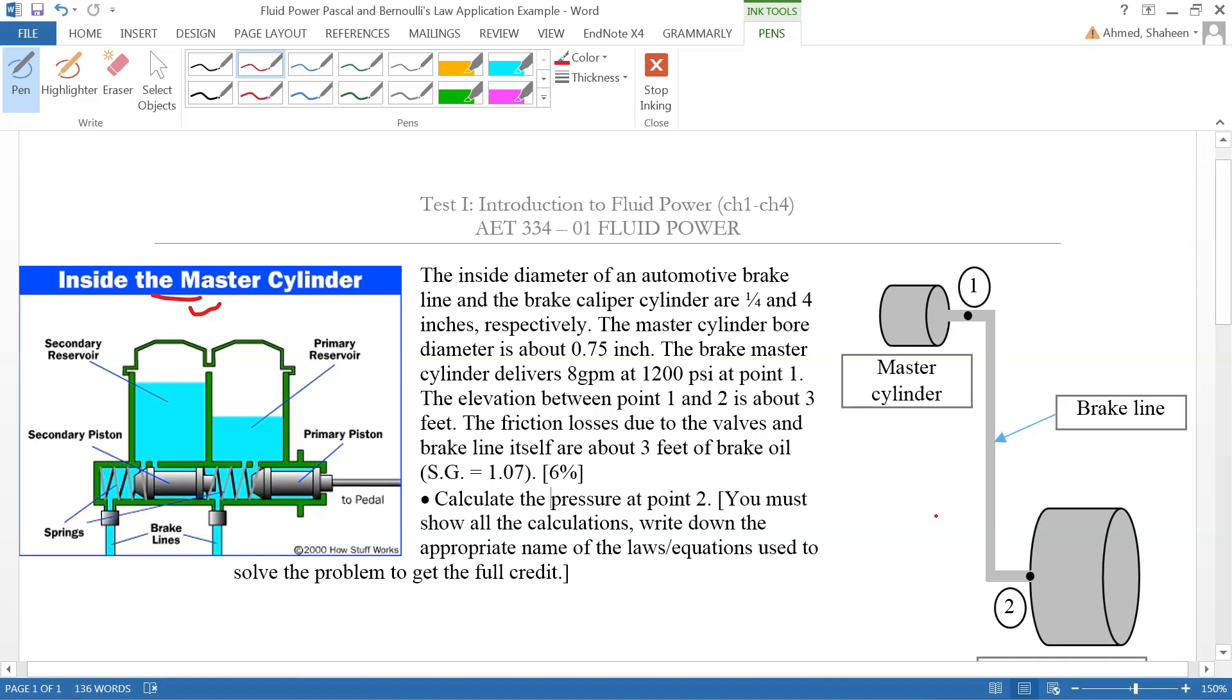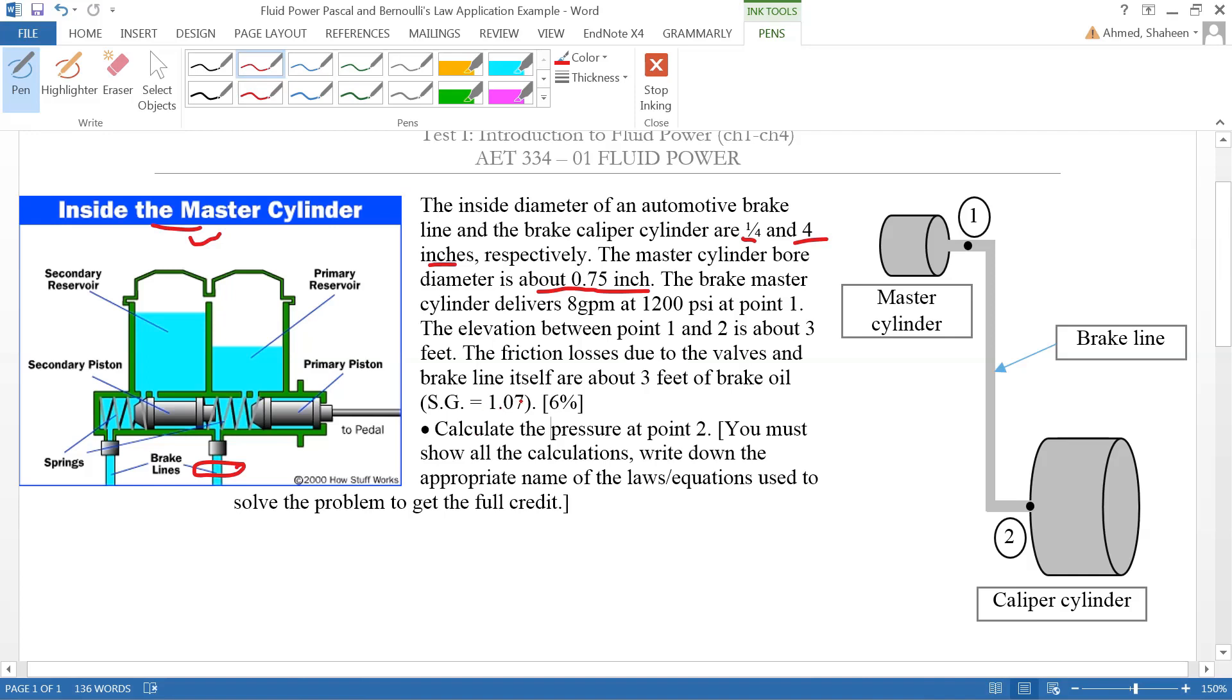The master cylinder diameter is 0.75 inch, the brake line is one-fourth inch, and the brake caliper cylinder which presses the brake is four inch diameter. The brake fluid specific gravity and other parameters are given.